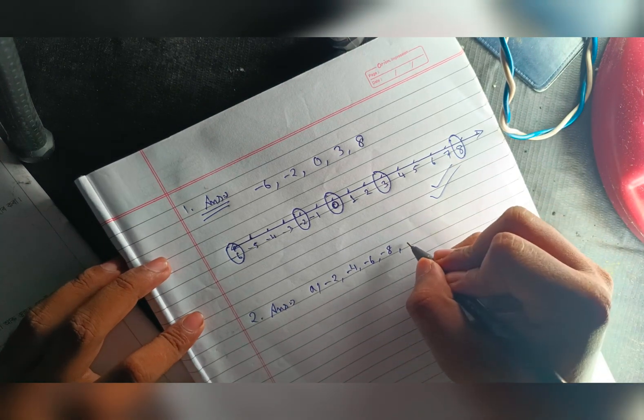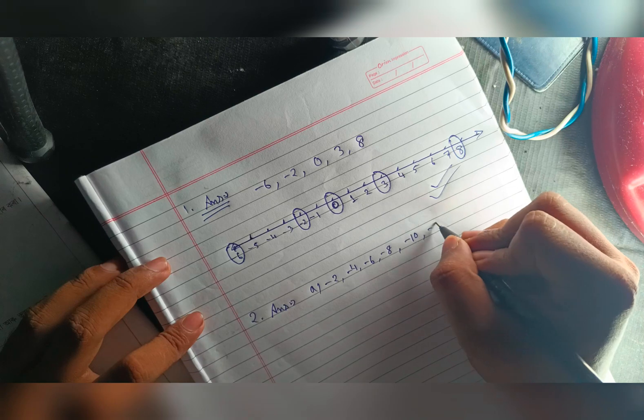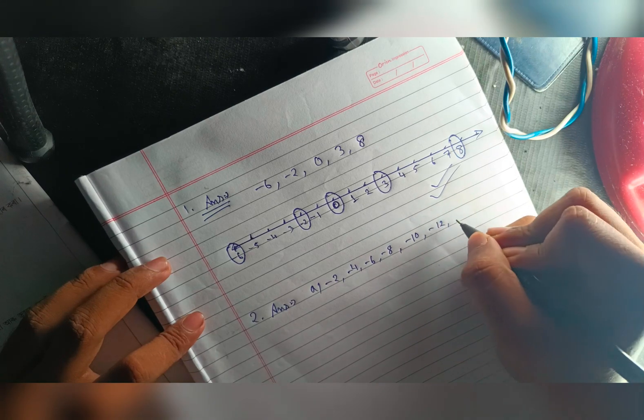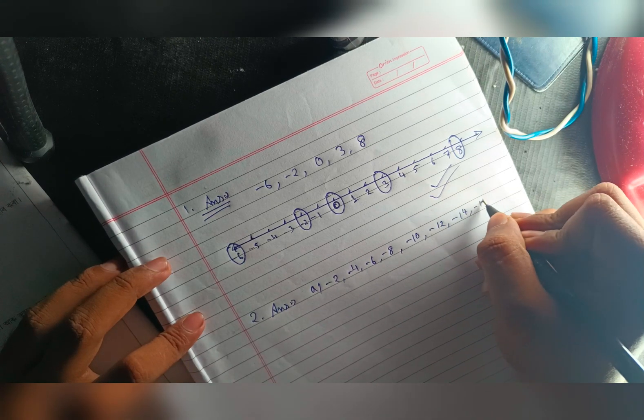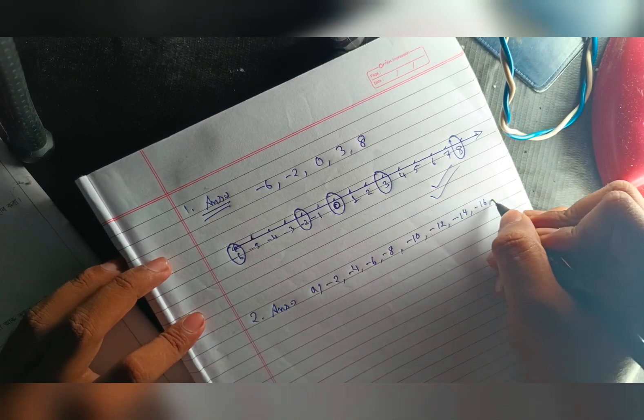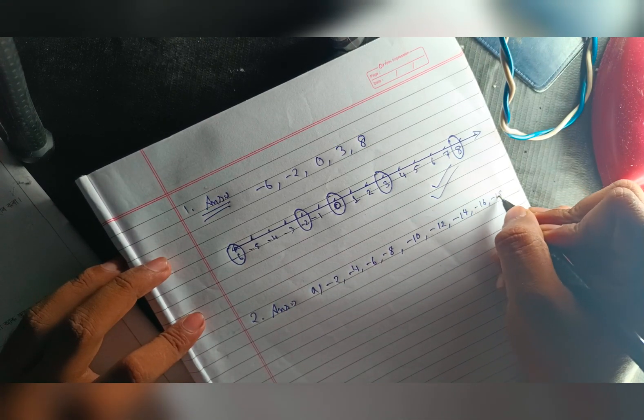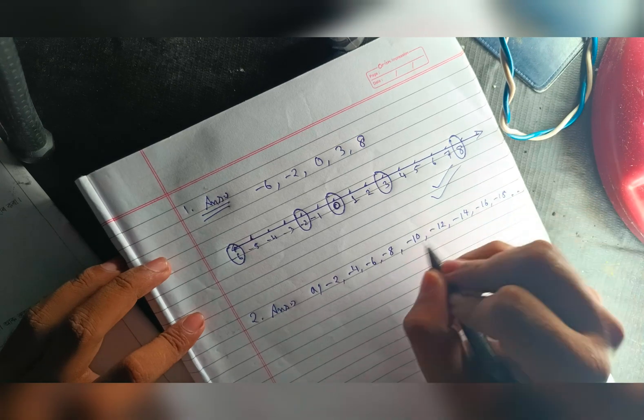2. This is minus 10, minus 12, minus 14, minus 16, minus 18. This is the dot dot dot dot.